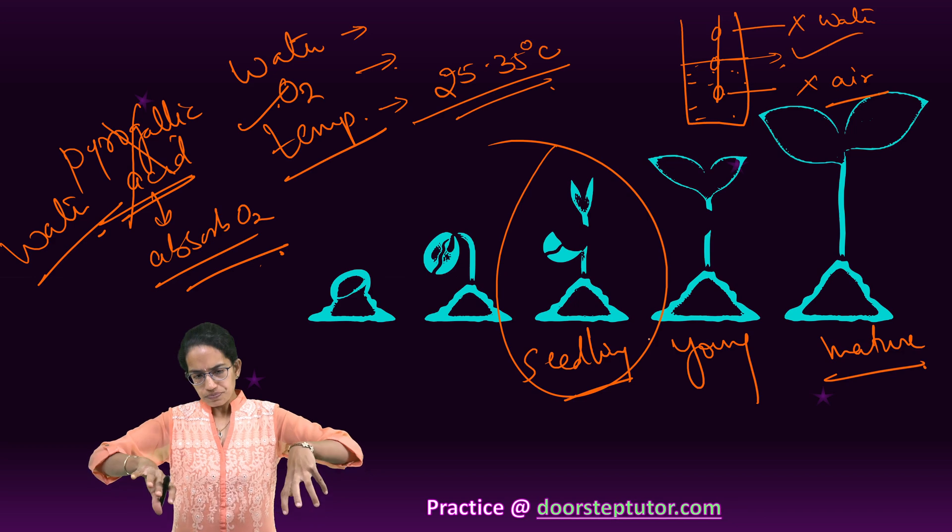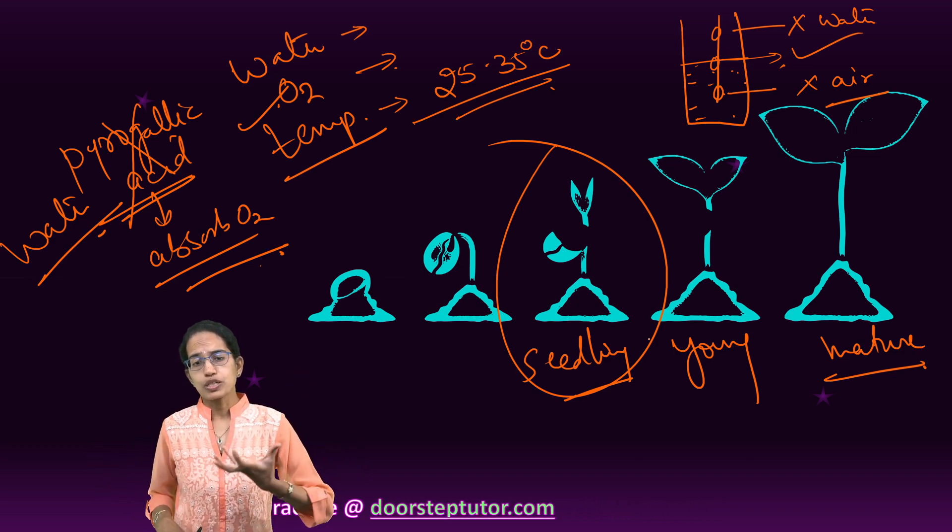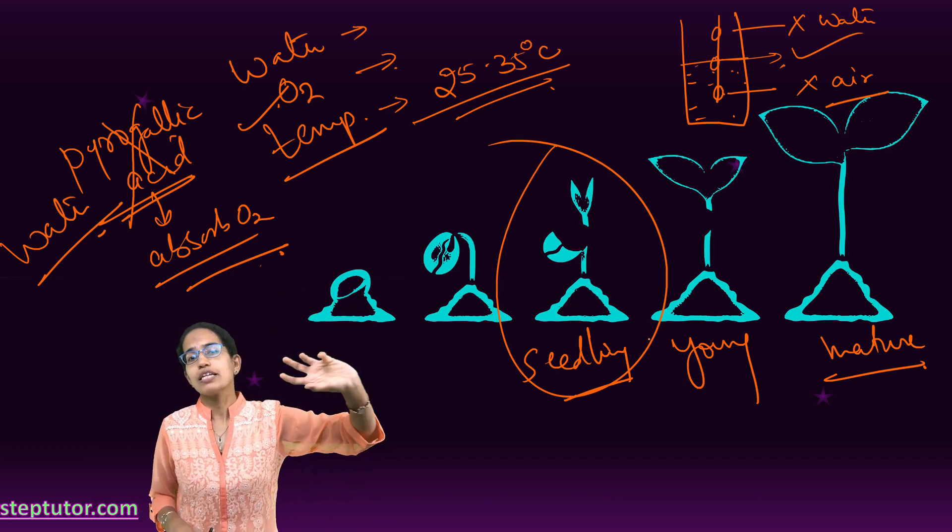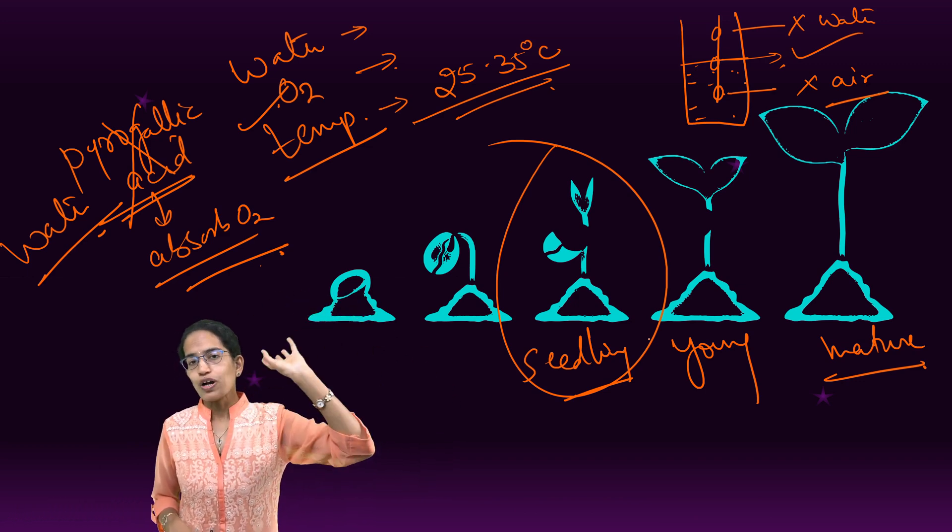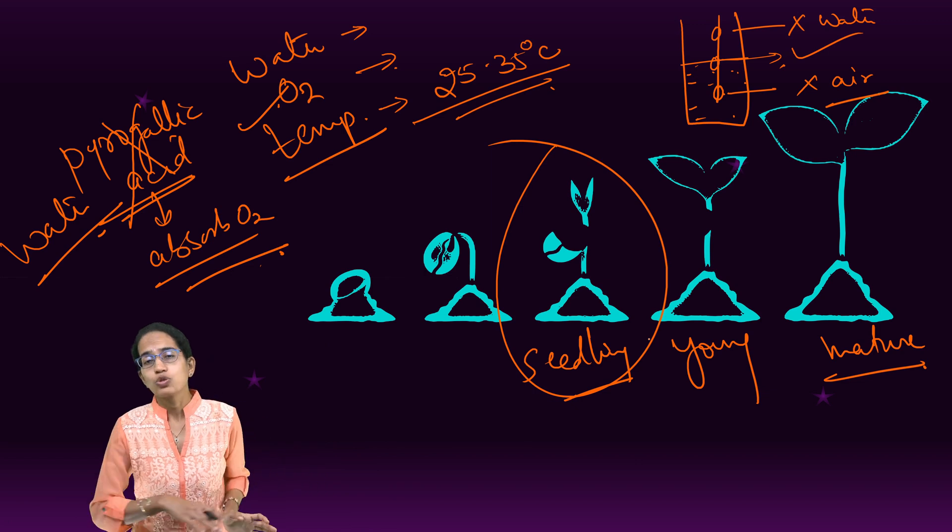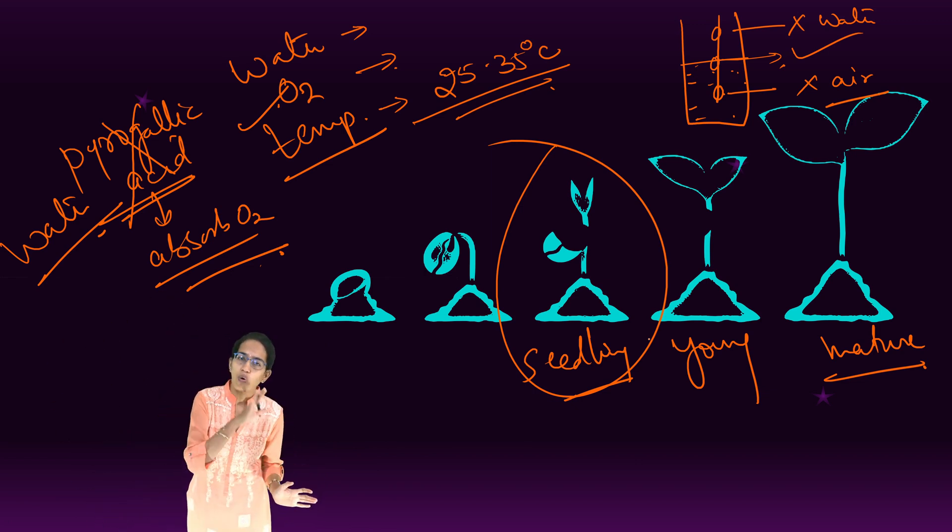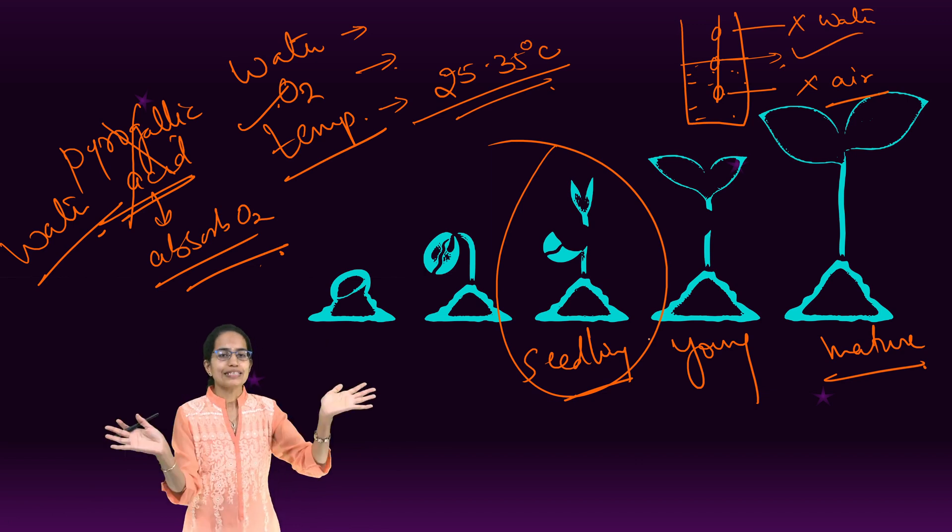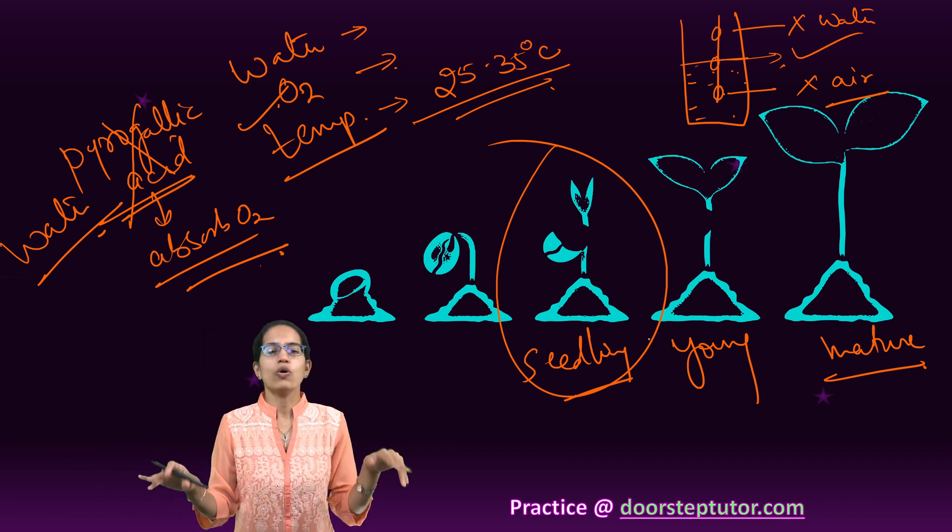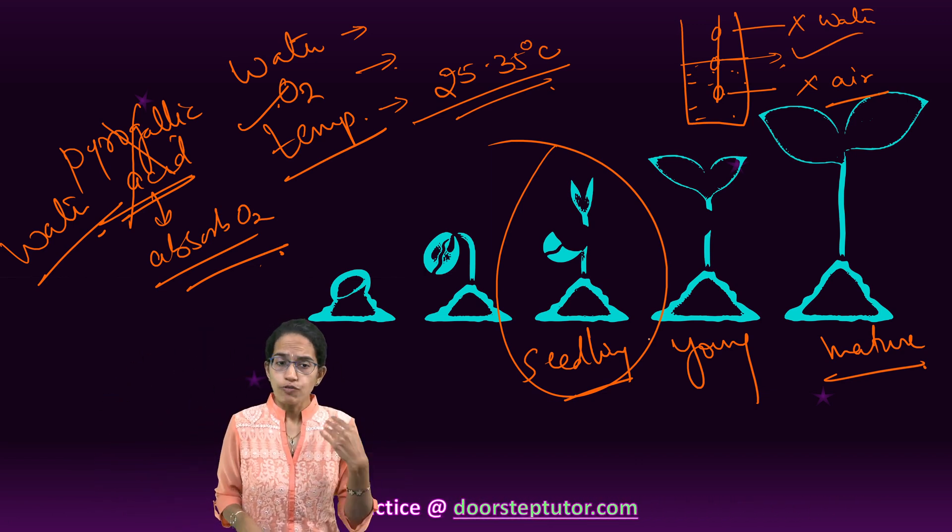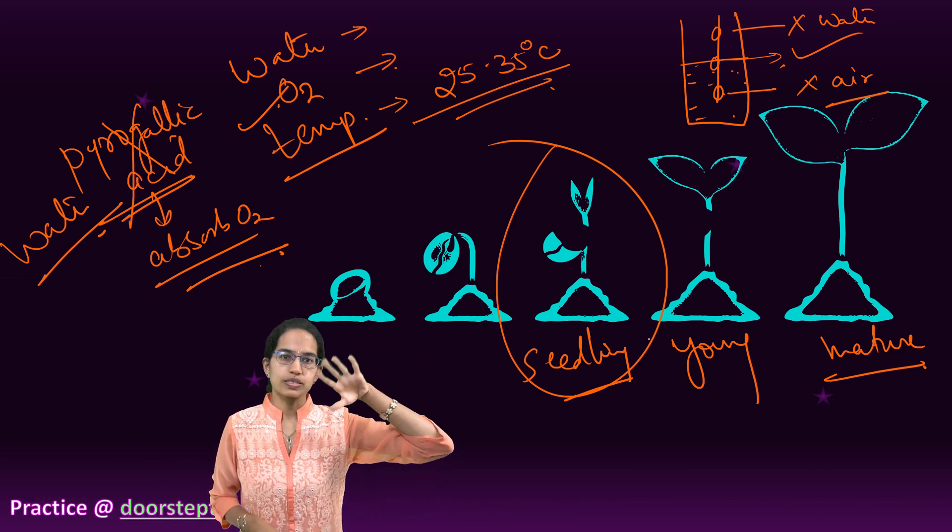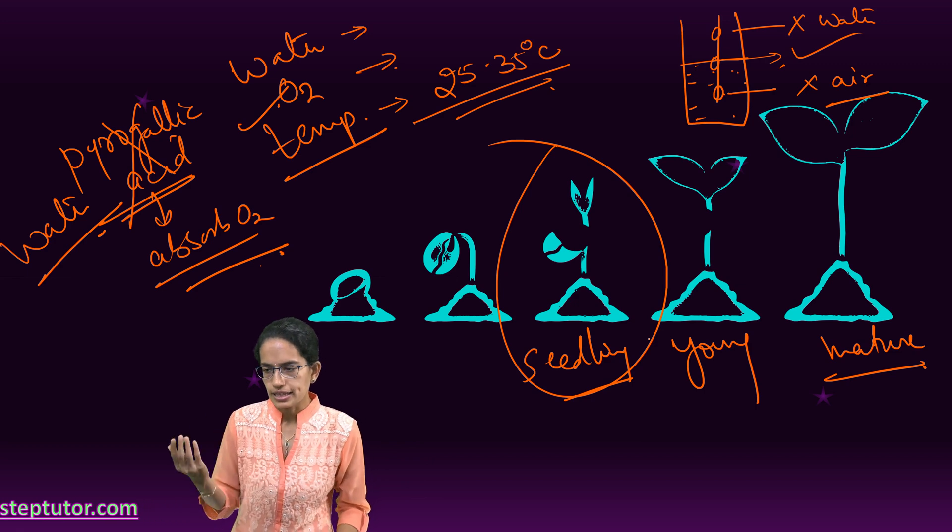Now, from the seed, the roots would actually absorb water and mineral through the xylem and then the leaves would manufacture the food. Once the leaf manufactures the food, through the phloem, it is transported to all parts of the plant body. So, it is transported down laterally as well as upward. In all the directions, you would have the flow of phloem but xylem would flow from the roots towards the shoot.